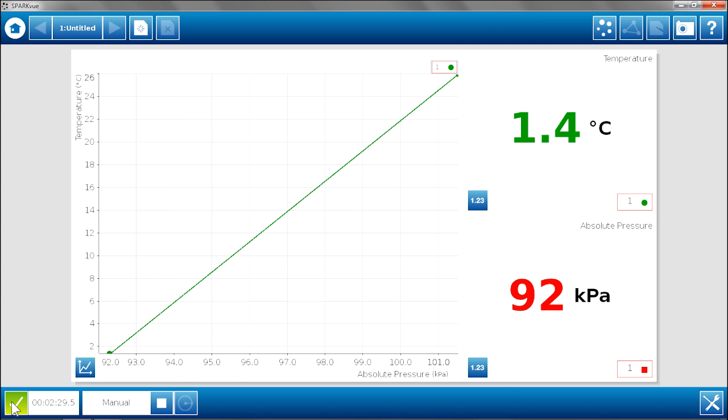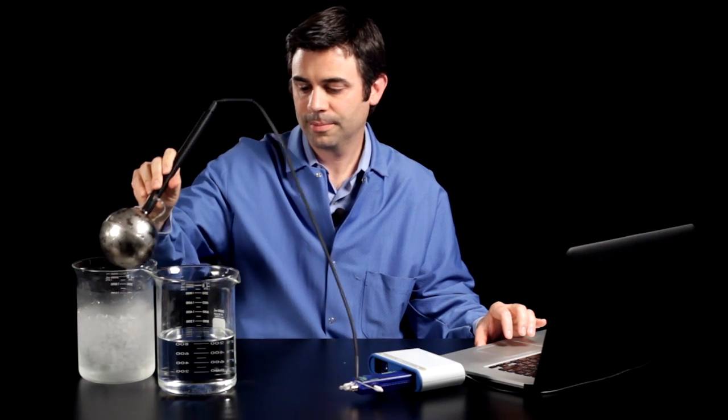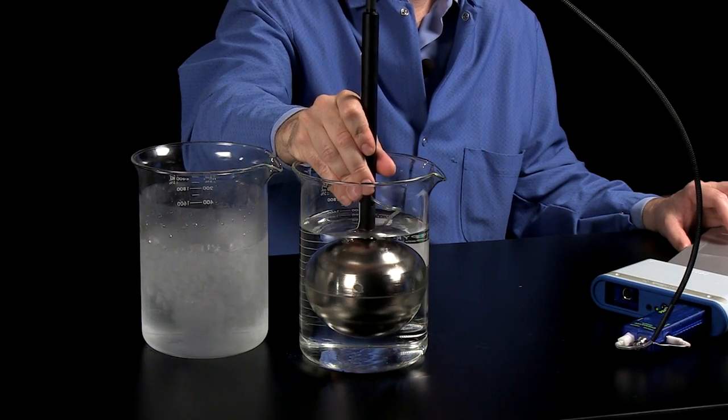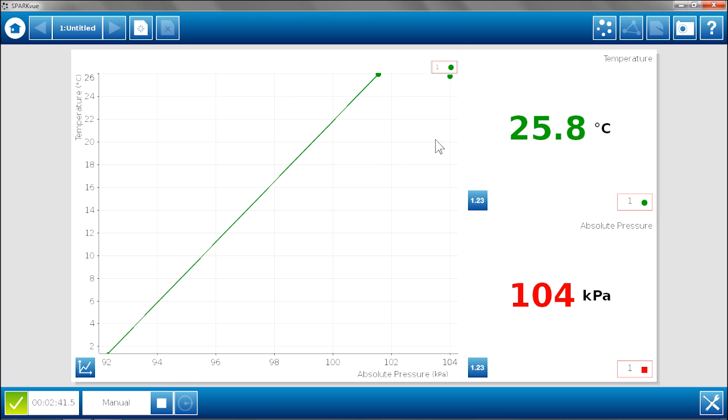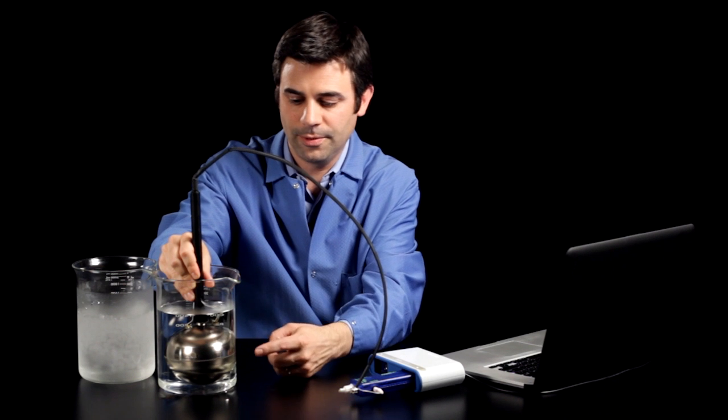Now I have two data points. Now I am going to put this into the warm bath. Again, I want to make sure this is completely submerged. And we can see the point on the graph rapidly rising as the temperature and pressure inside the sphere attempt to equilibrate with the warm water.